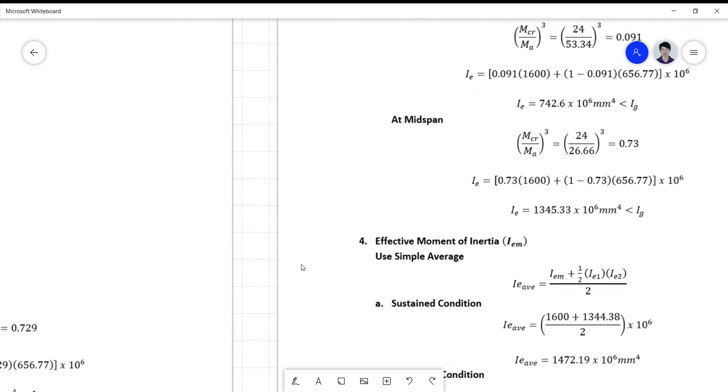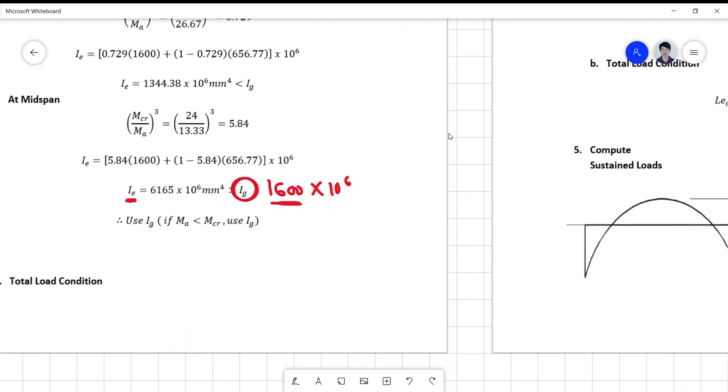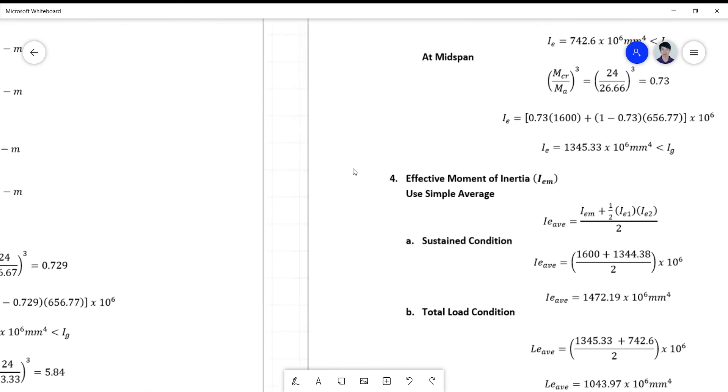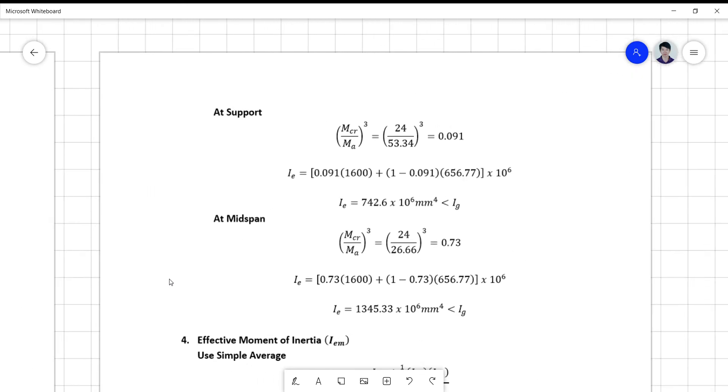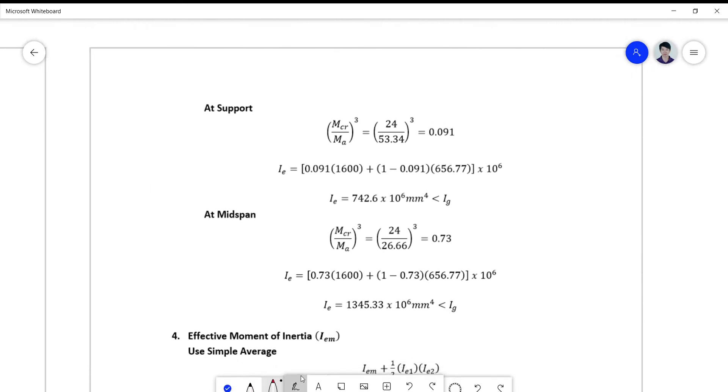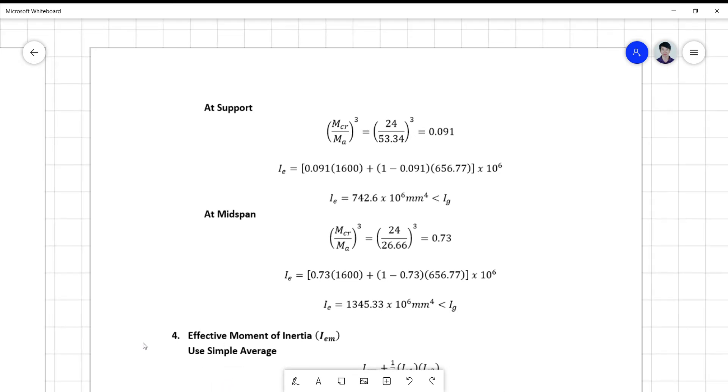For your total load condition, this is just the same in terms of procedure. All we need to get is the cube ratio of your MCR over MA value. And again, we notice that both are less than 1, so we can expect that your IE will be less than IG there. So this is the procedure on how to do it.